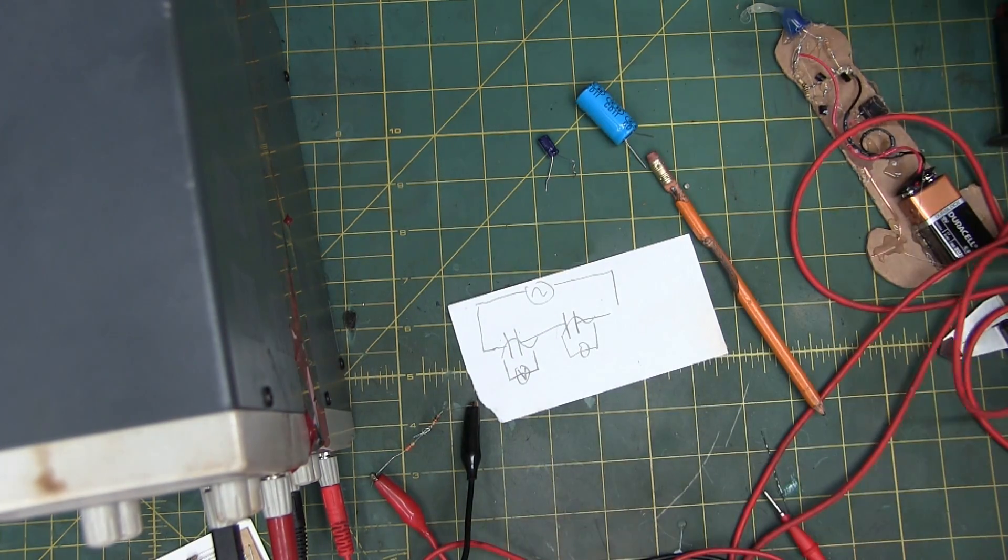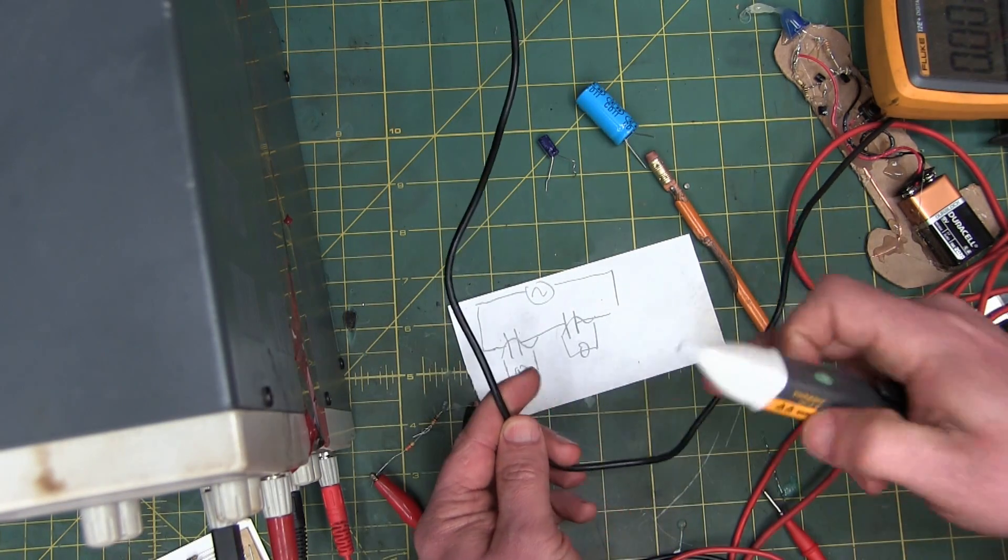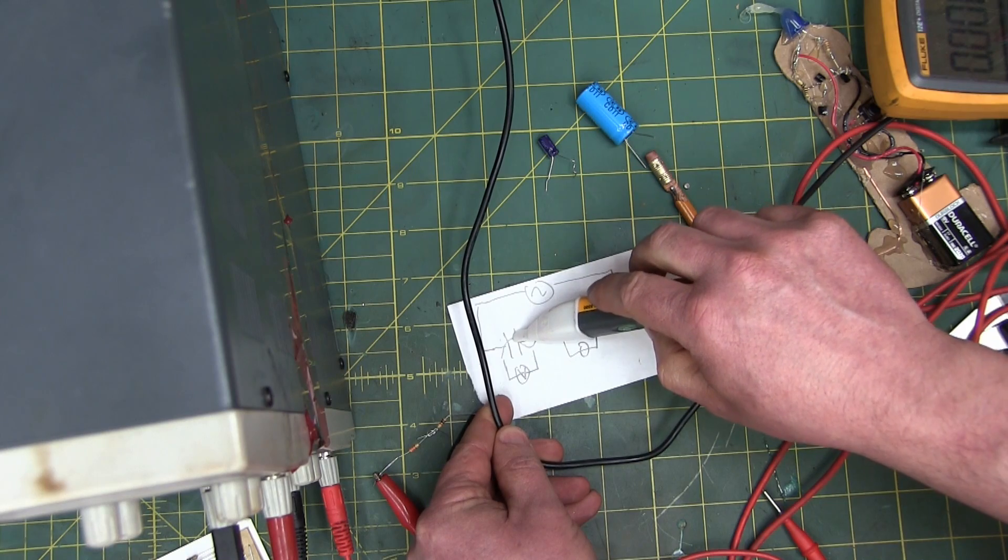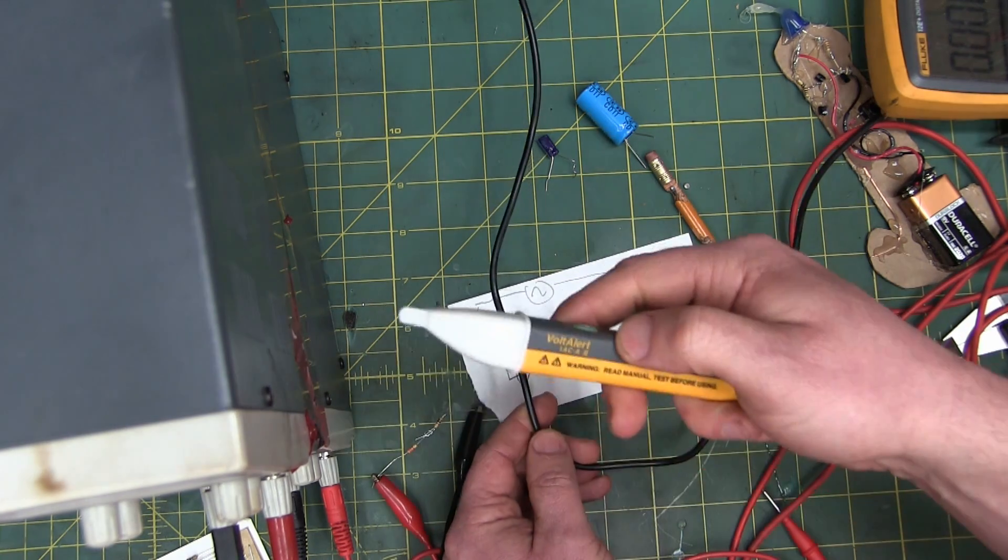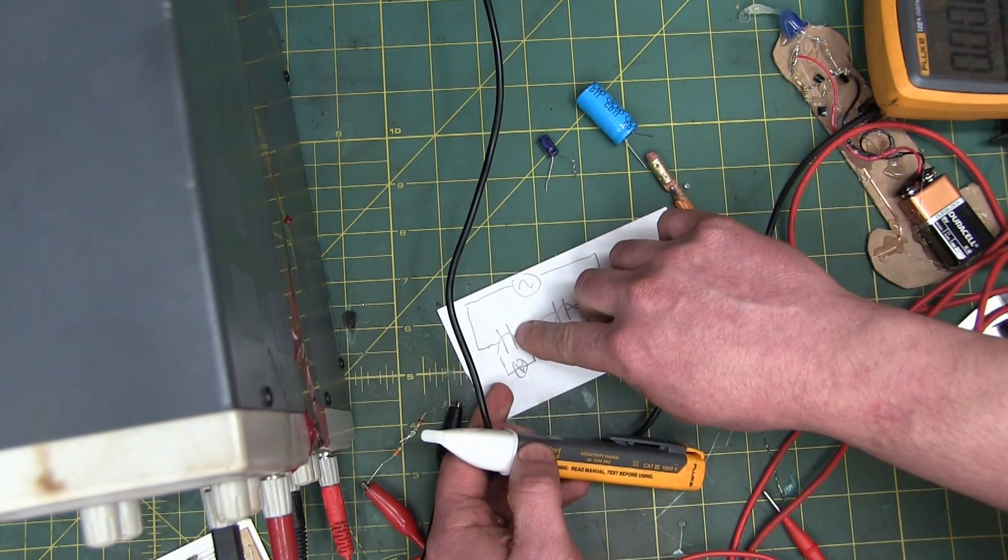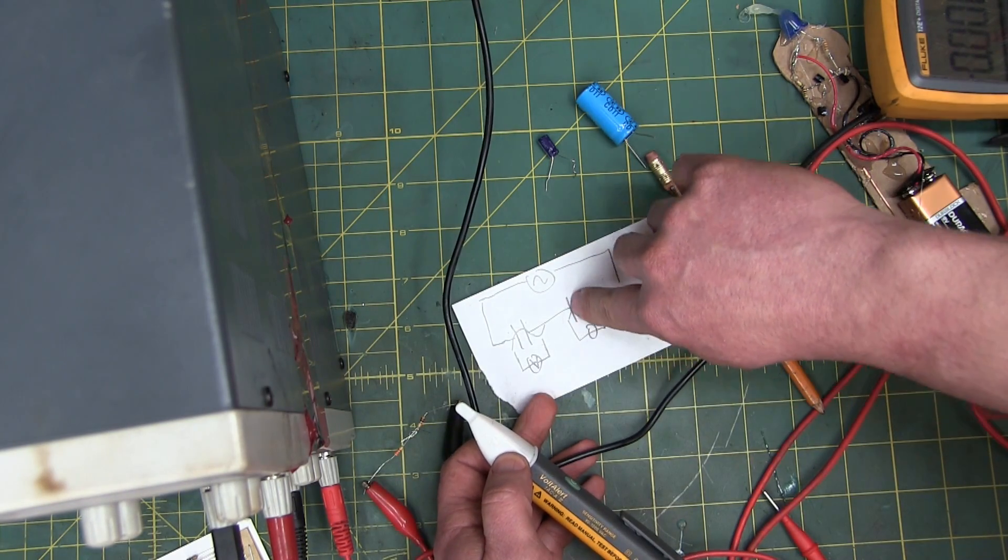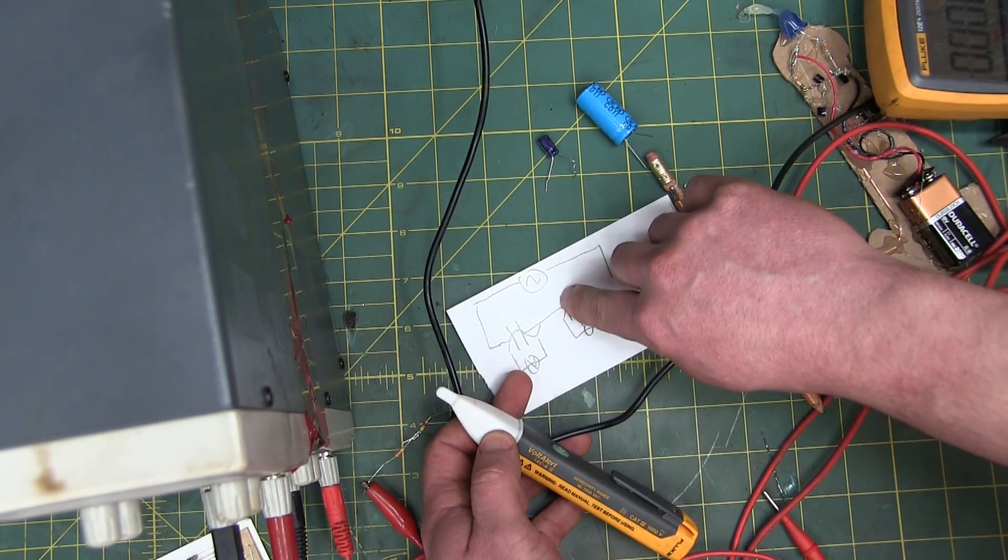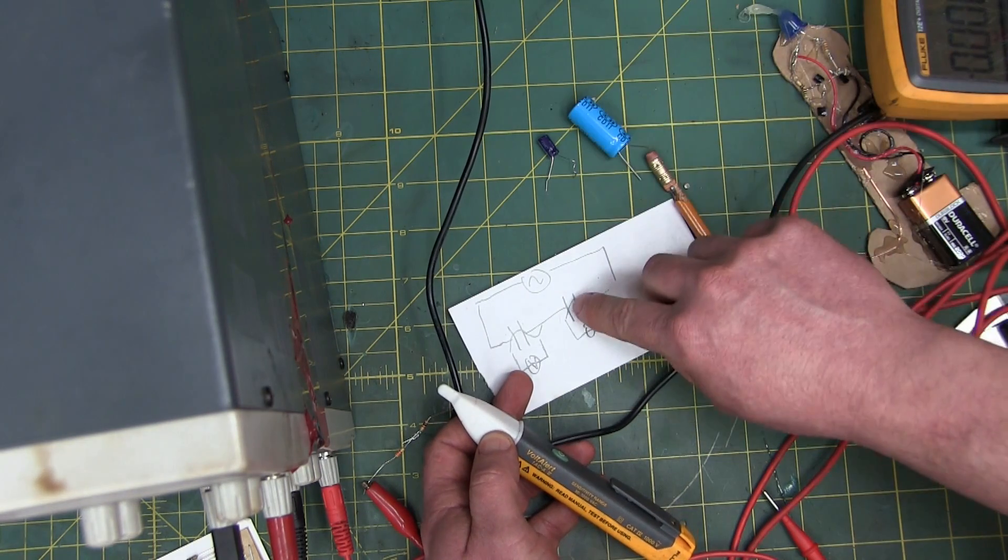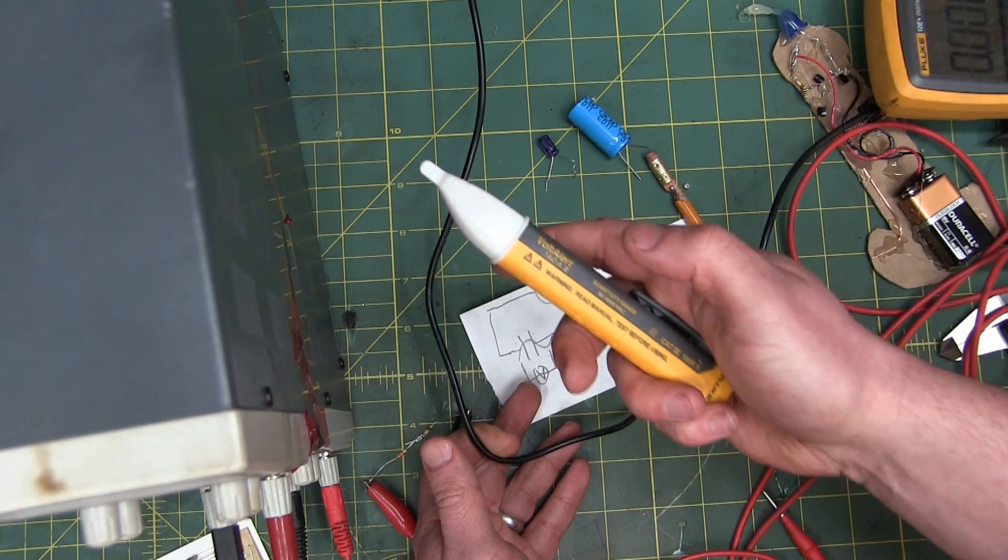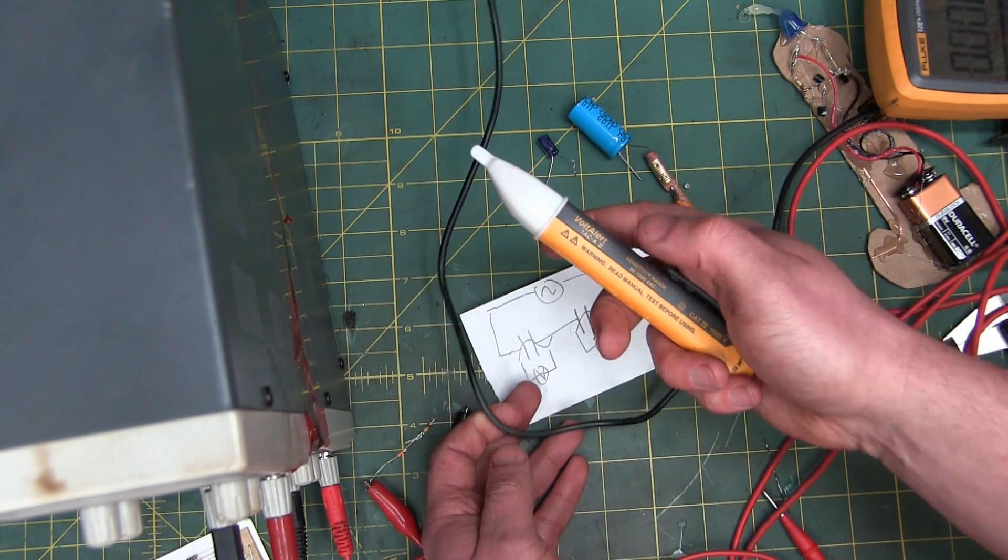Now we take a wire what's got power going through it. And what we do is we consider this wire, this one platen. And then we consider the tip of this tool, this other platen. So the tip of the tool is this platen of the capacitor. And this platen of the capacitor is your body. You are a capacitor.